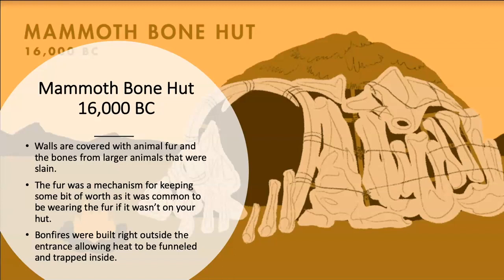The Mammoth Bone Hut of 16,000 BC. These were interesting because they were just covered with animal fur and bones from larger slain animals. The fur was a mechanism for keeping some warmth, as it was common to be wearing the fur if it wasn't on your hut. Bonfires were built right outside the entrance, allowing heat to be funneled and trapped inside. This was great innovation — moving from a cave of nothing but hard, raw, cold, to now having fur insulation, enough to keep you a little more warm.